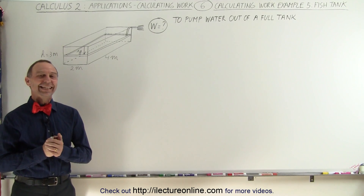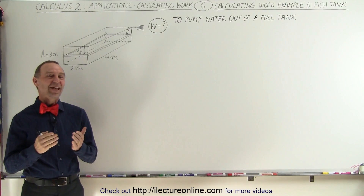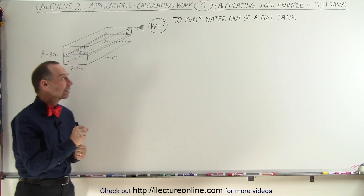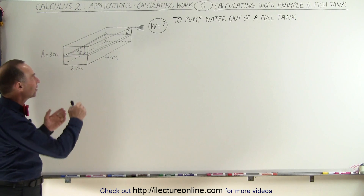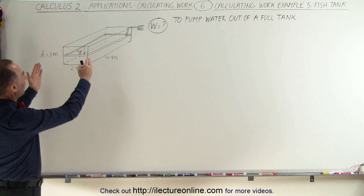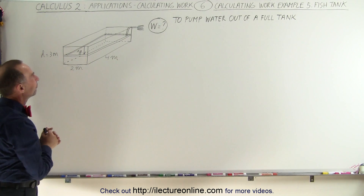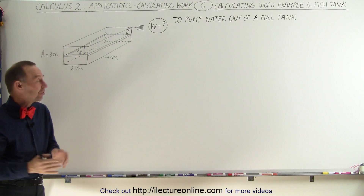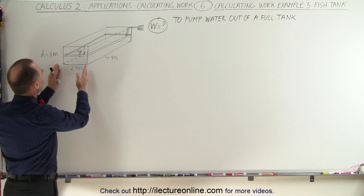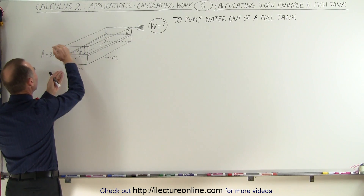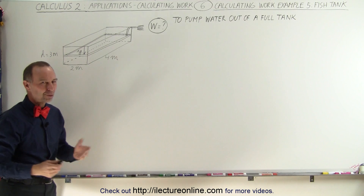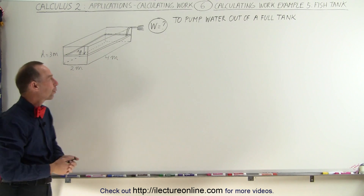Welcome to ElecturnLine. In this example, we're going to calculate the work that it's going to take to pump the water out of a full fish tank. This is a very big fish tank — it's four meters long, two meters wide, and three meters high, something you would find in an aquarium.